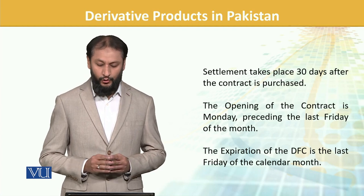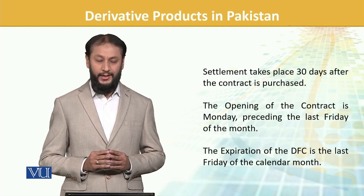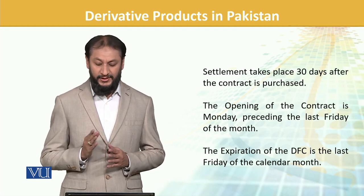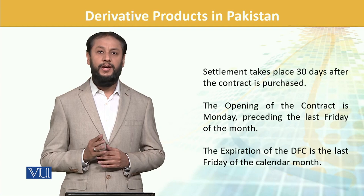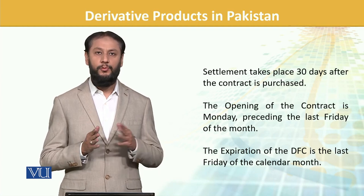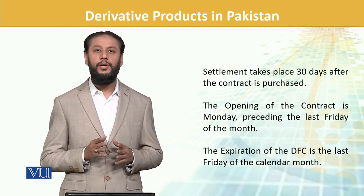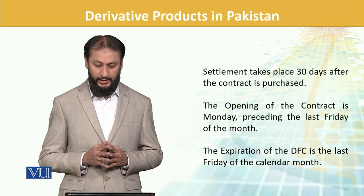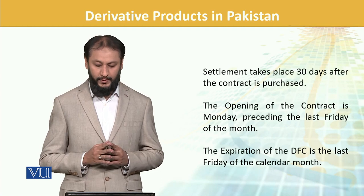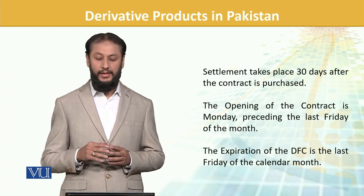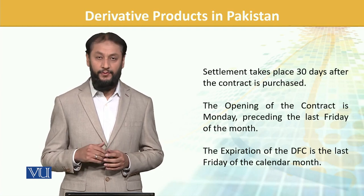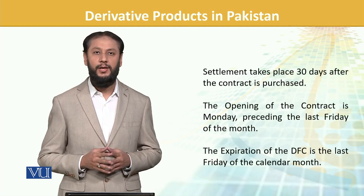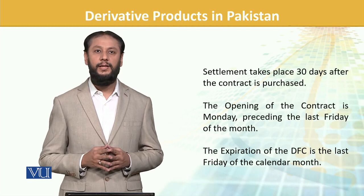The opening of the contract is on Monday. The preceding last Friday of the month is when execution takes place, and the expiration is on the last Friday of the calendar month, which completes the 30-day cycle.